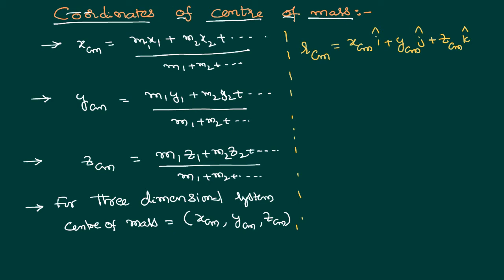These are called coordinates of centre of mass or representation of the centre of mass in the format of a vector. If someone has asked you what is the magnitude of that position vector, we know we can calculate the magnitude as square root of X component square, Y component square and Z component square.